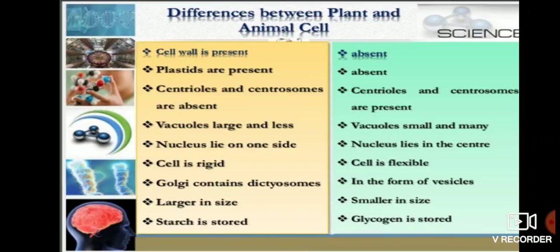In plant cells, the nucleus lies on one side — because the vacuole is in the center, the nucleus moves toward the periphery. In animal cells, the nucleus is located in the center.